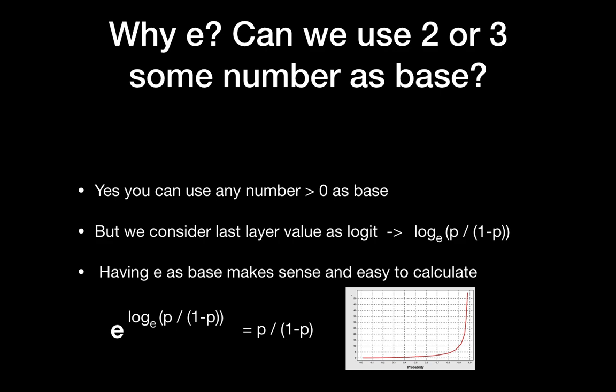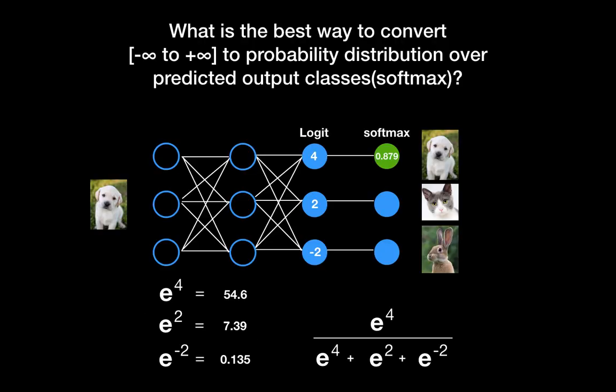We consider the last layer values as logits, and you can see the equation with e as the base. The value e is simply a mathematical constant, and using e as the base makes sense and is easy to calculate, as you can see from the equation. So let's calculate softmax — it is just a normalized probability. The denominator is e^4 plus e^2 plus e^(-2) from this example, giving us normalized probabilities.